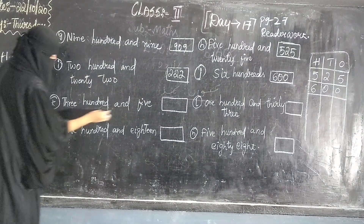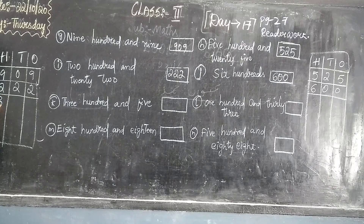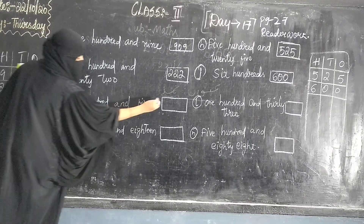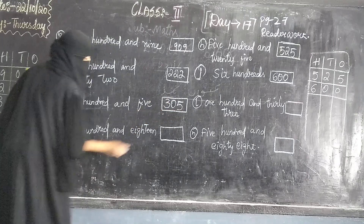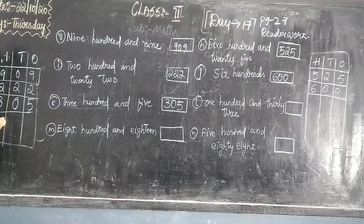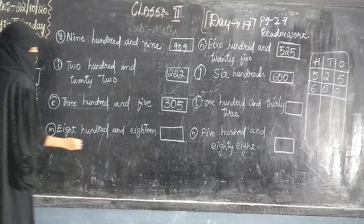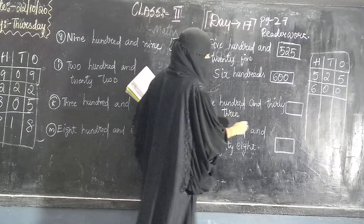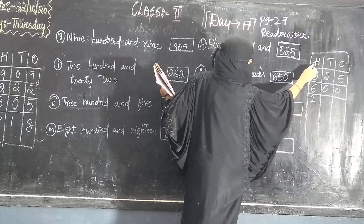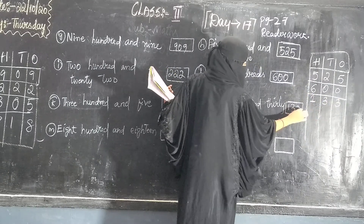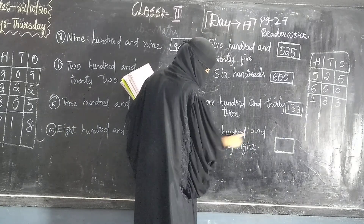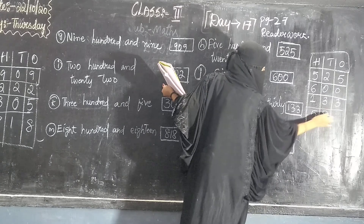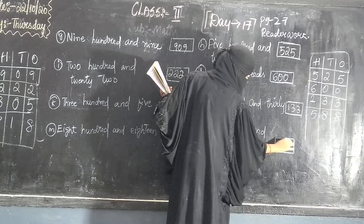Next, now 305. 100 plus the concentration — 305. 10s bhi nahi hain, then 0, 5 — so write 305. Okay. Next, 818. 818. Okay. Next, now 588. 588.